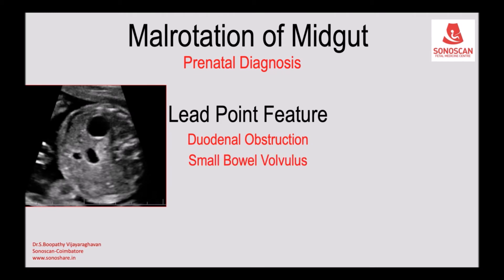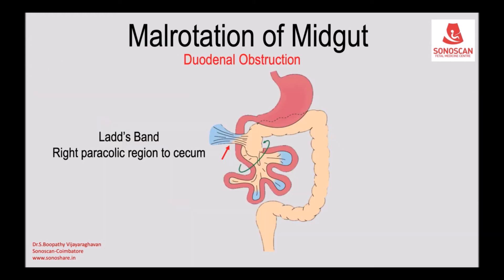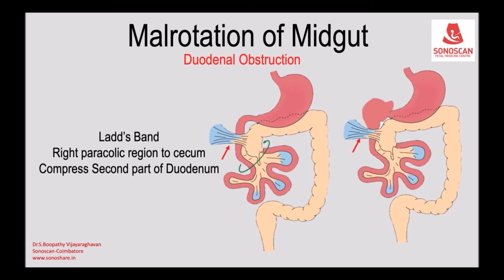In malrotation, small bowel volvulus may occur. The superior mesenteric vein is anterior and to the left of the superior mesenteric artery, anterior to the second part of the duodenum. Ladd's bands are peritoneal bands extending from the right paracolic region to the cecum, compressing the second part of the duodenum.